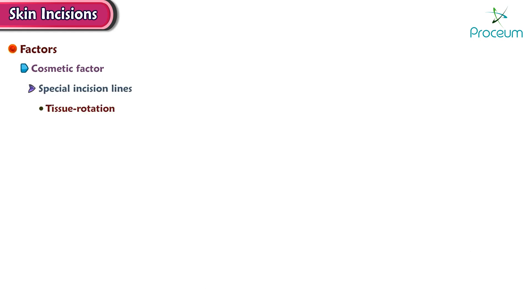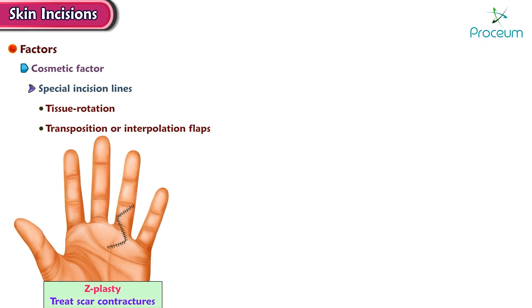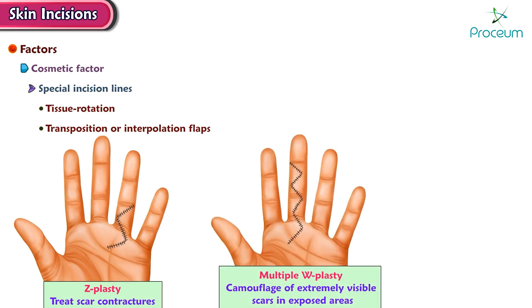Special incision lines should be planned in the case of tissue rotation, transposition, or interpolation flaps, such as Z-plasty — a useful technique to treat scar contractures — and multiple W-plasty for camouflage of extremely visible scars in exposed areas.